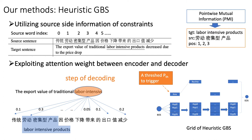This is our HGBS method. In our method, we must set a threshold for the attention weights to trigger the starting of a constraint or growth of the grid. Our algorithm includes six steps, and our paper gives full details of the algorithm.